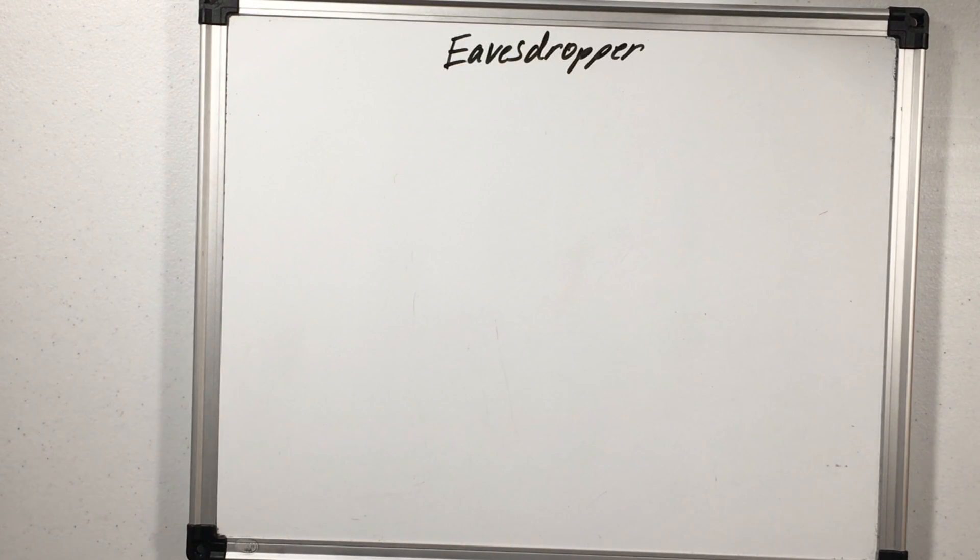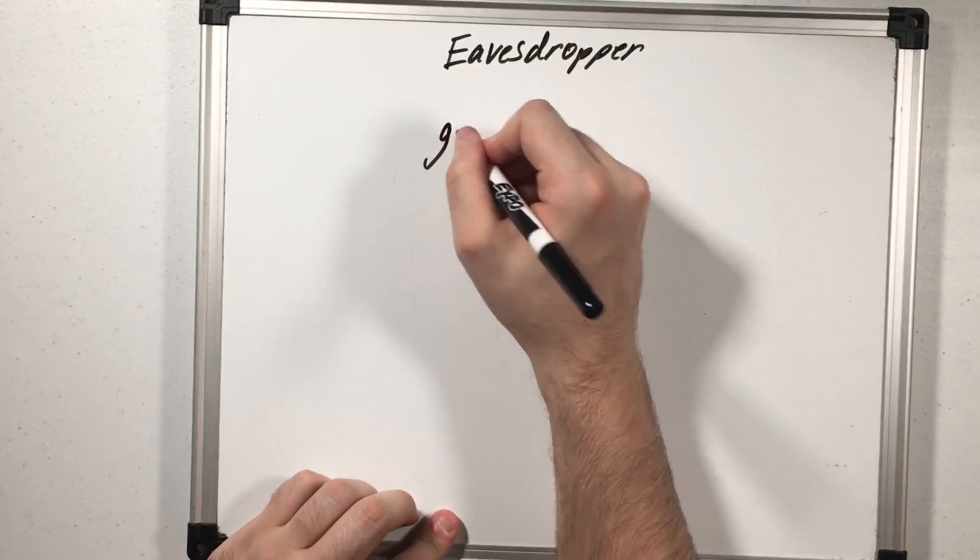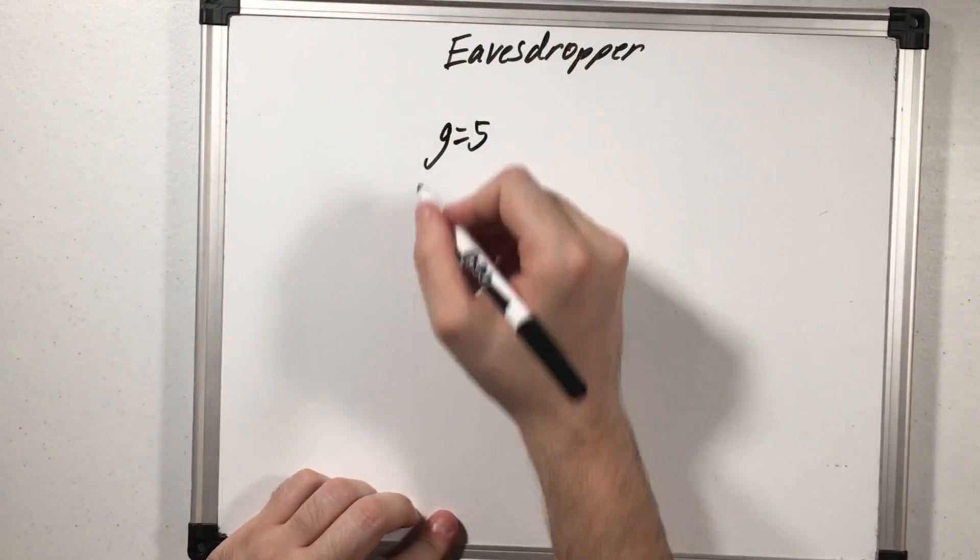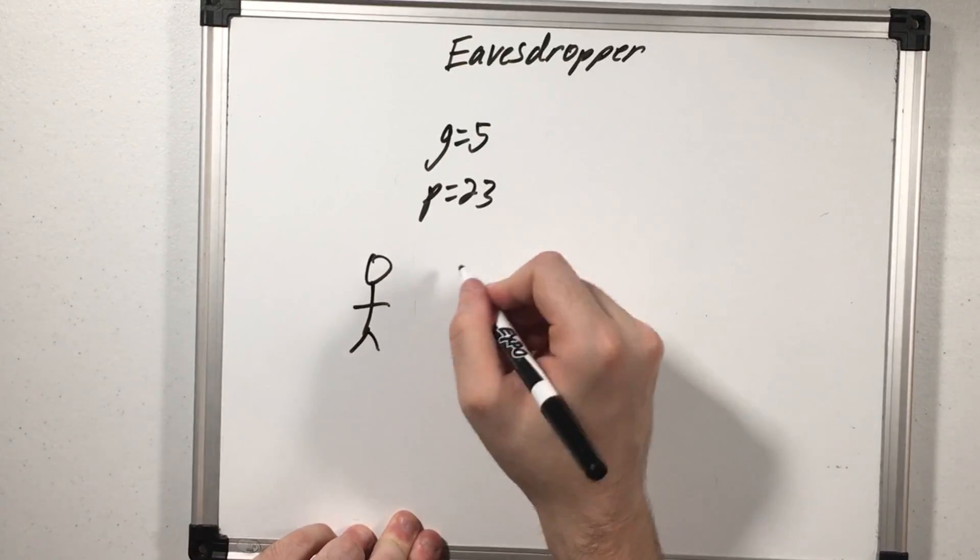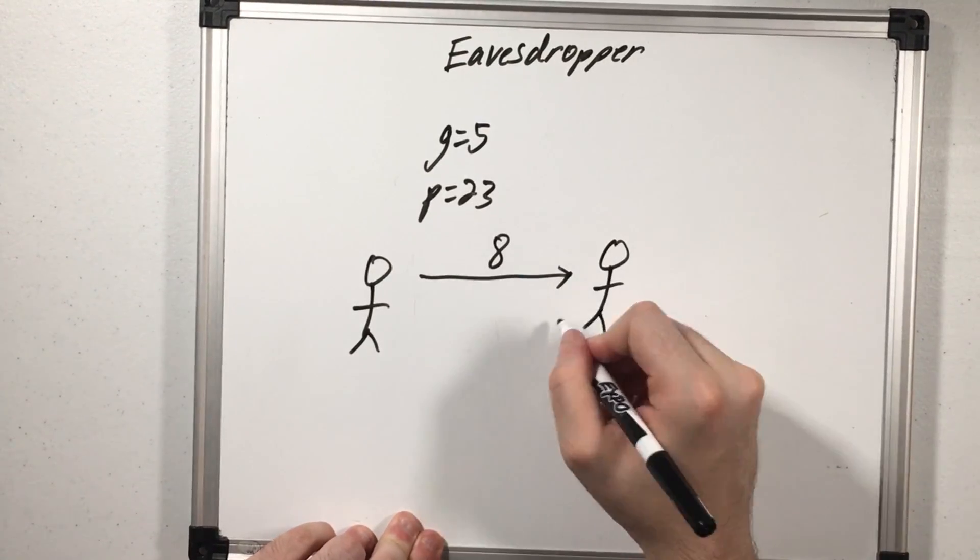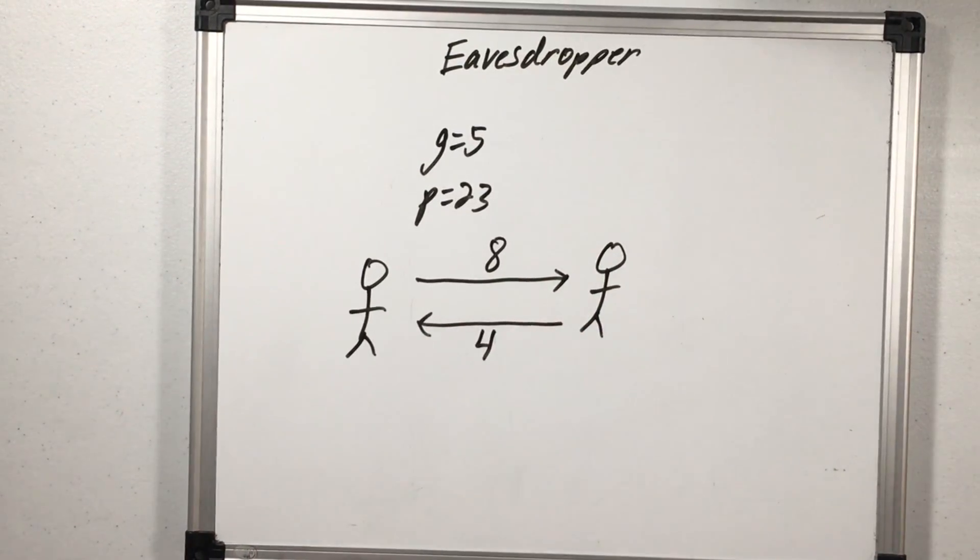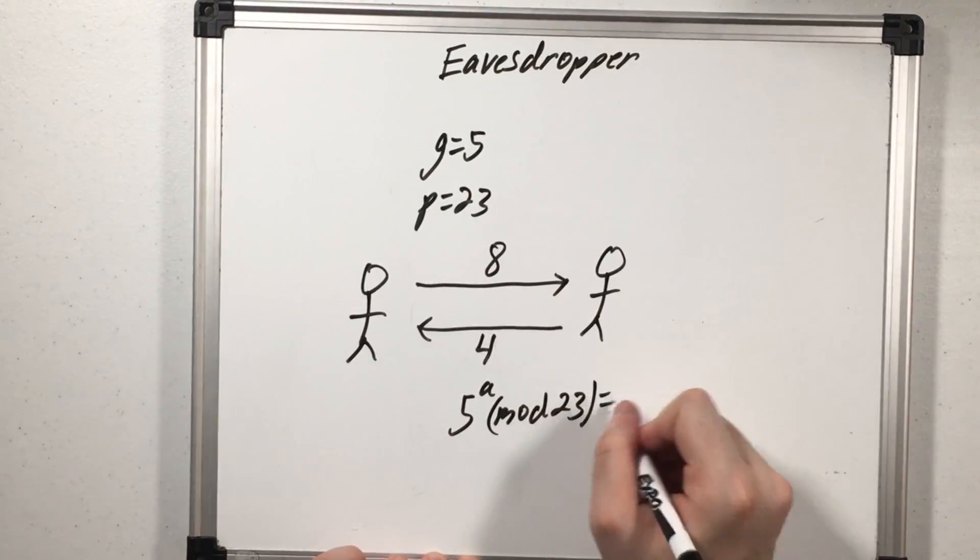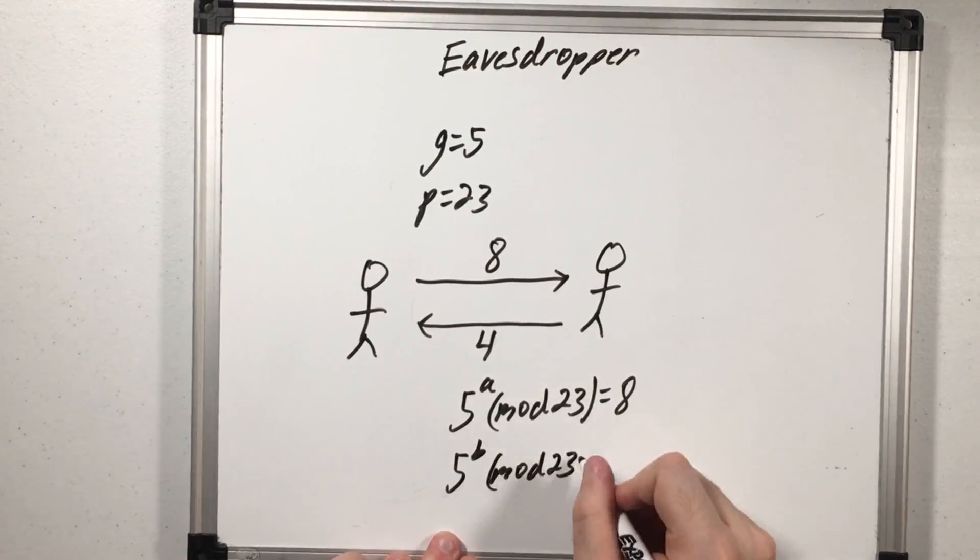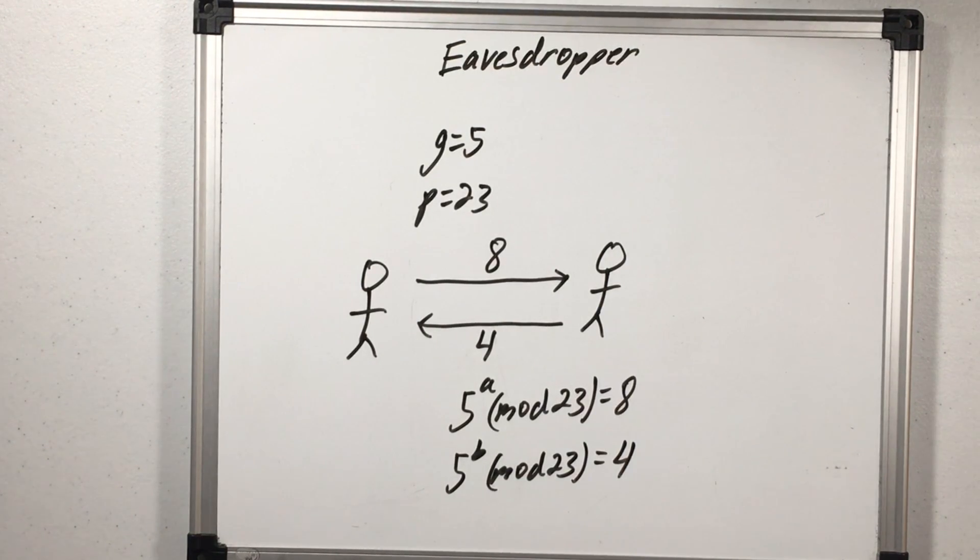Now what does the eavesdropper know? Well they know the value of G, they know the value of P, and they know what number I sent my friend and what number he sent me and they know these are both the value of G raised to something mod 23. So the only thing we really kept secret were our values of A and B, everything else the eavesdropper knows.